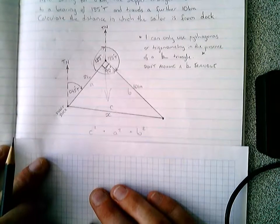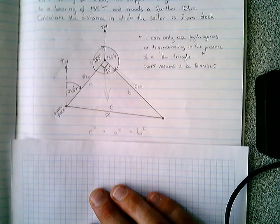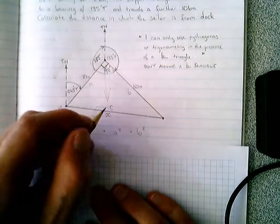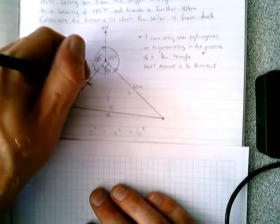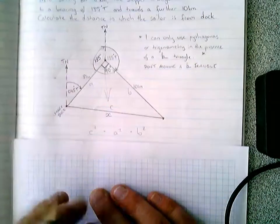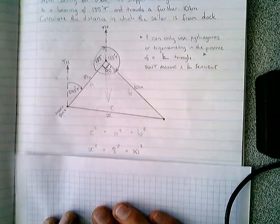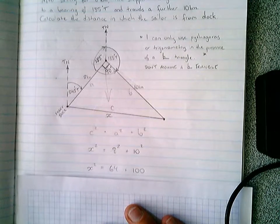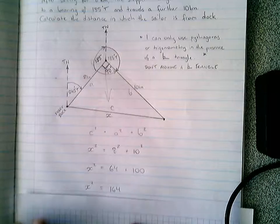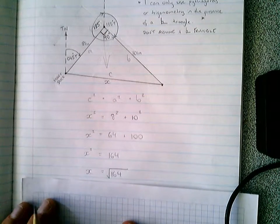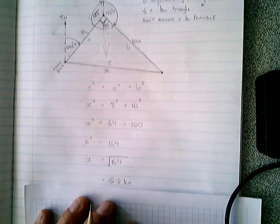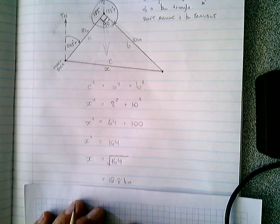Pythagoras' formula or theorem is c squared equals a squared plus b squared. Substituting our value for c, our value for a, and our value for b into the formula, and then expanding and simplifying before solving, we get an answer of 12.8 kilometers.